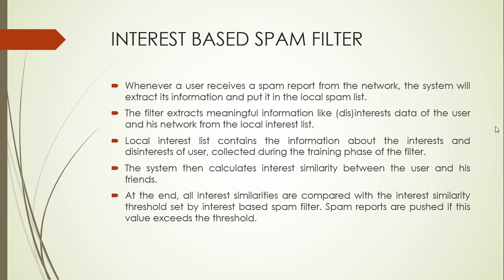So what is an interest-based spam filter? Whenever a user receives a spam report from the network, the system extracts its information and puts it in the local spam list. Local interest lists contain information about the interests and disinterests of the user collected during the training phase. The system calculates the interest similarity between the user and his friends, which is compared with the interest similarity threshold set by the interest-based spam filter. Spam reports are pushed if this value exceeds the threshold.